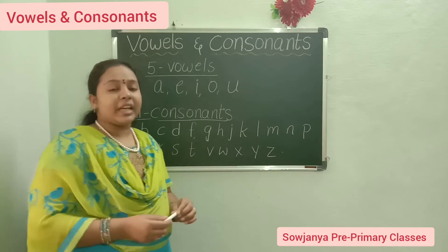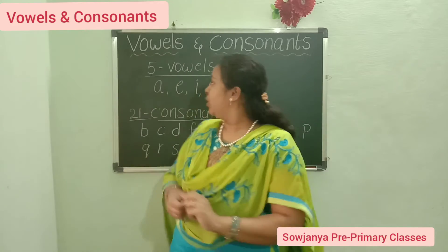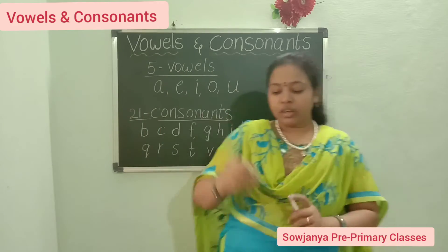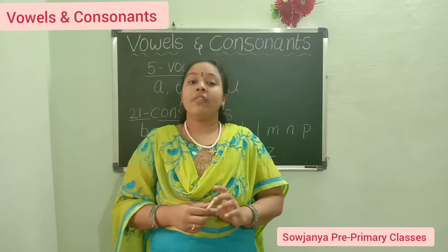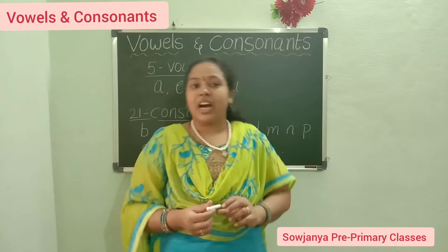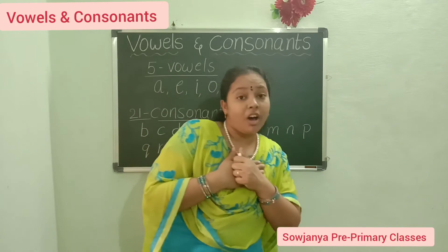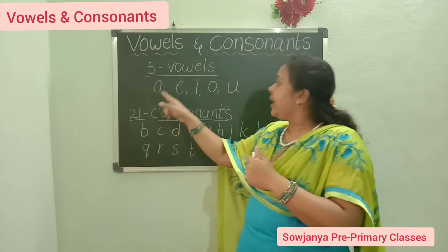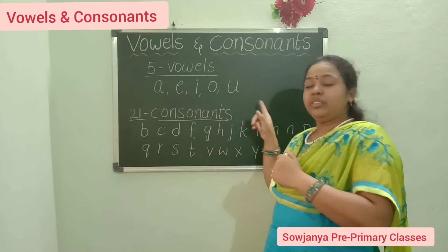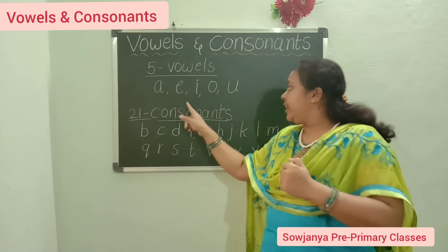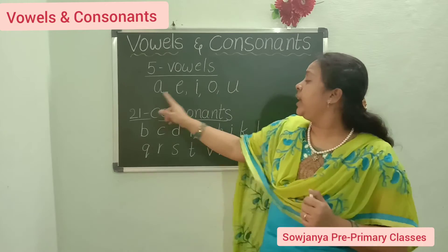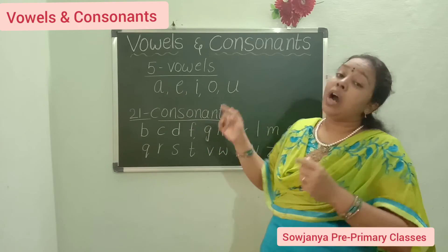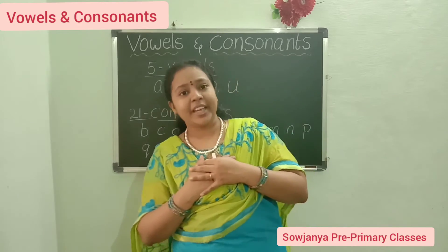Now we will tell a small rhyme about vowels. Okay children. Vowels of the alphabets, I know them all by name. So A, E, I, O, U. A, E, I, O, U. A, E, I, O, U. I know them all by name.